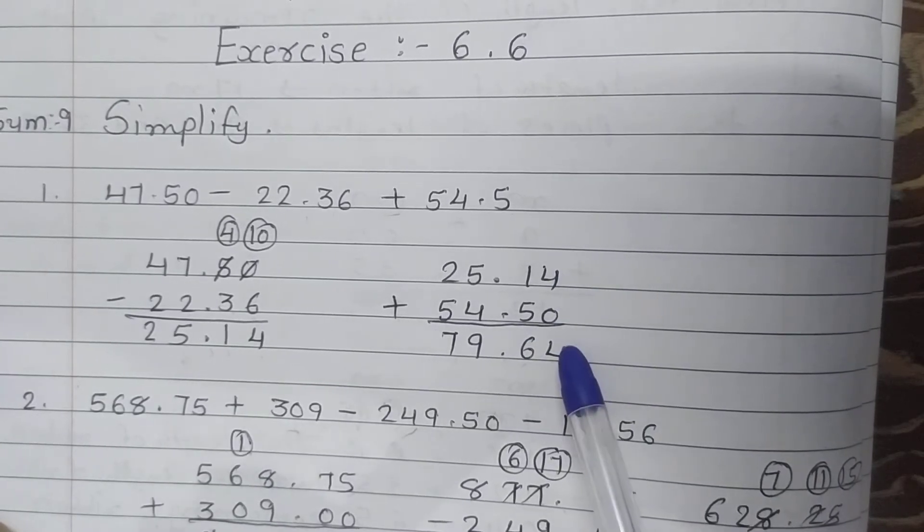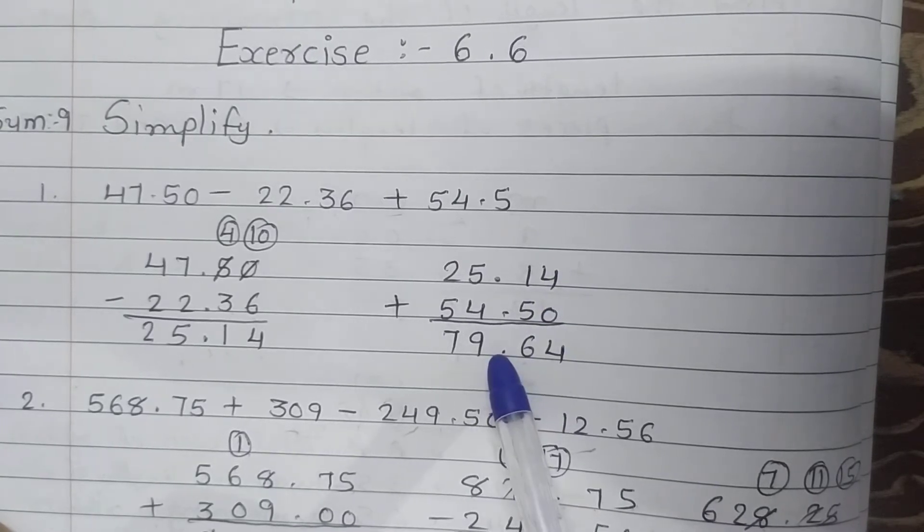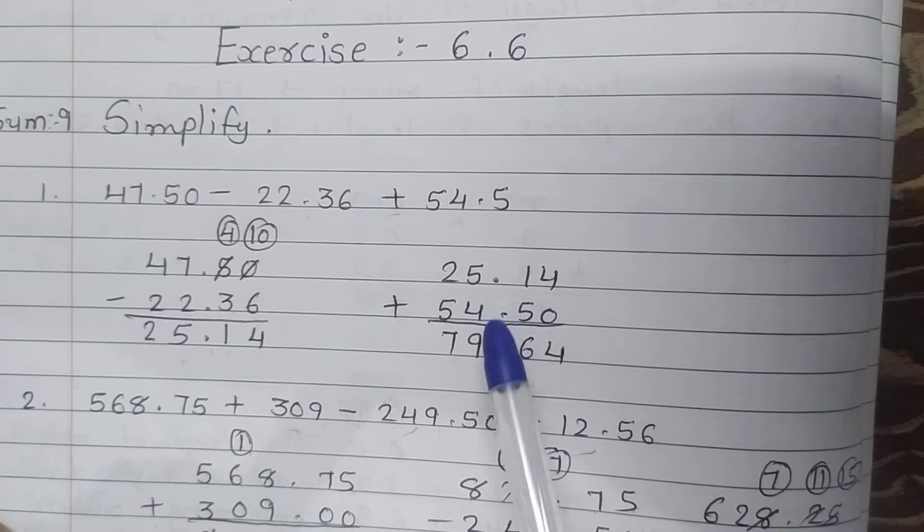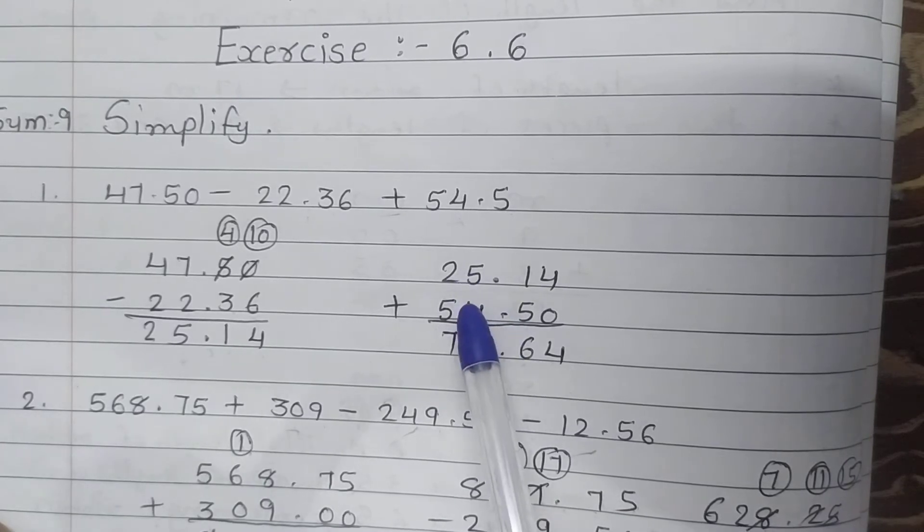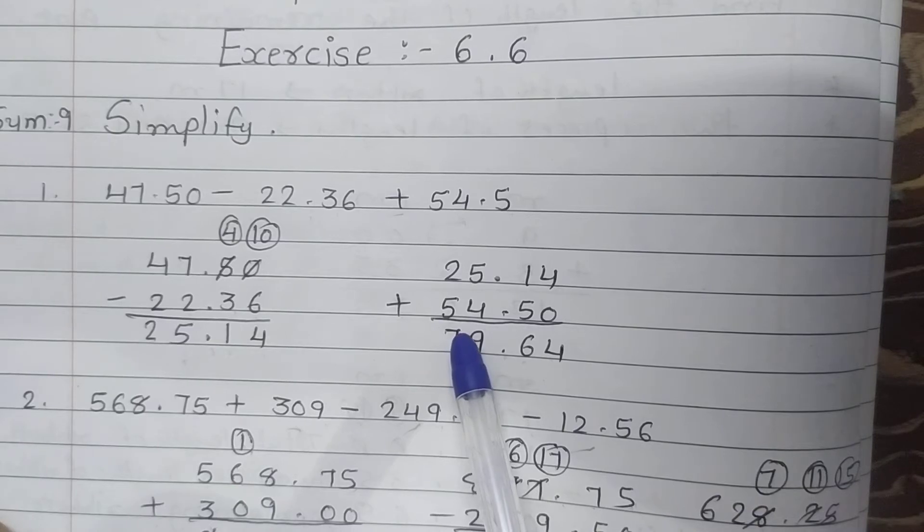4 plus 0 is 4, 1 plus 5 is 6. Point as it is. 5 plus 4 is 9, and 2 plus 5 is 7. In this way you have to simplify the given sums.